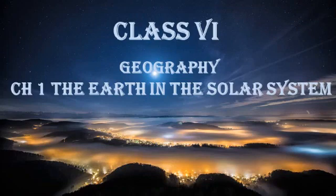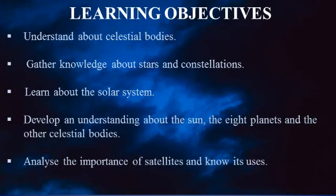Classics Geography Chapter No. 1: The Earth in the Solar System. Learning objectives: In this chapter we will understand about celestial bodies, gather knowledge about stars and constellations, learn about the sun's family — the solar system — and develop an understanding about the sun, the eight planets, other celestial bodies, and analyze the importance of satellites and know their uses.